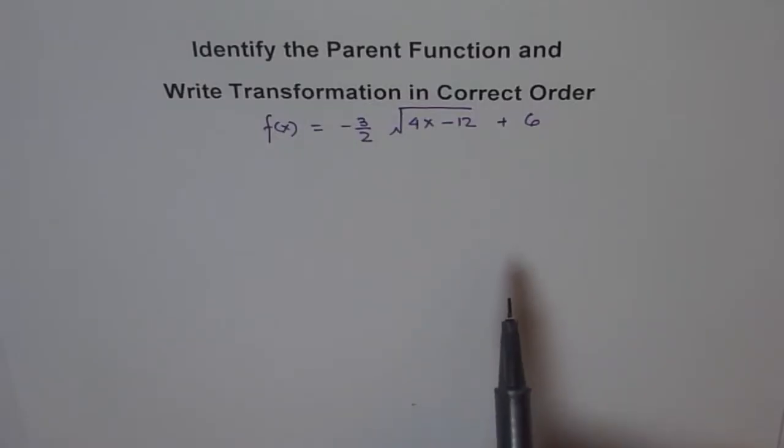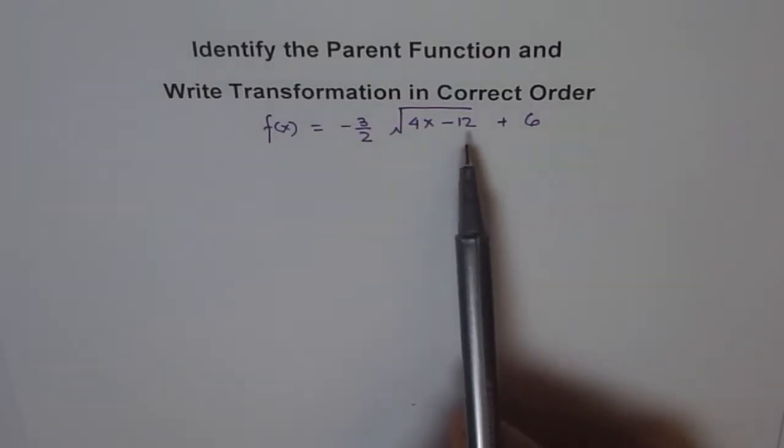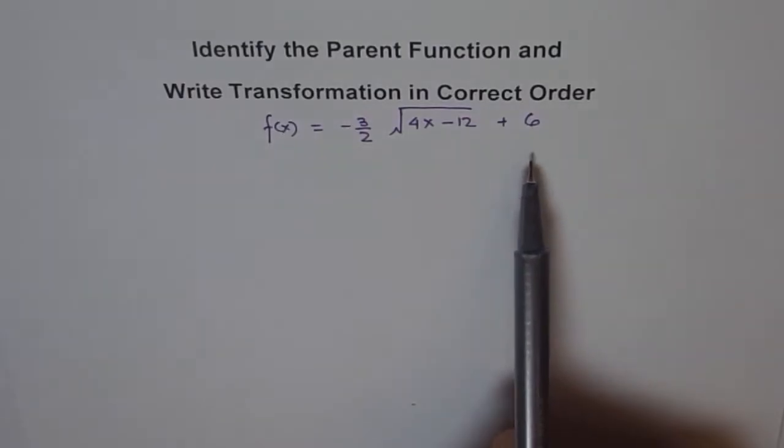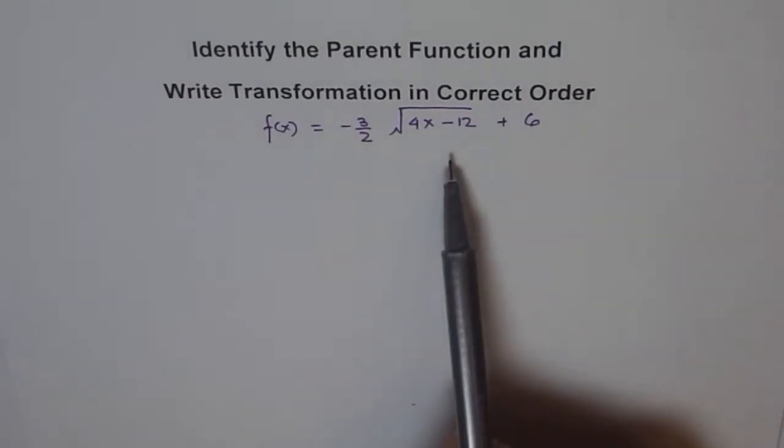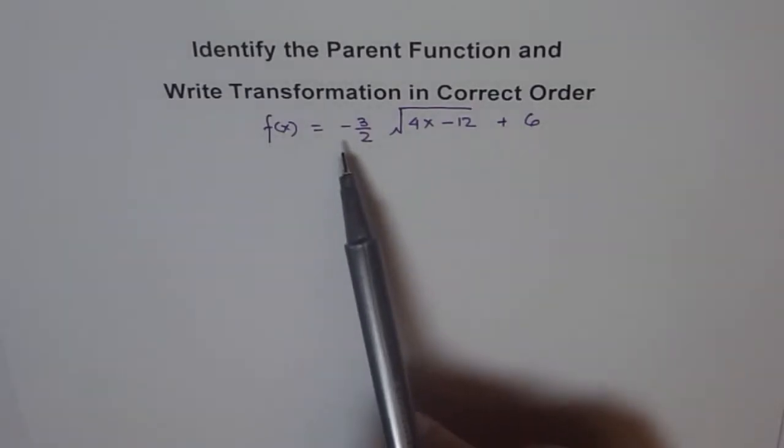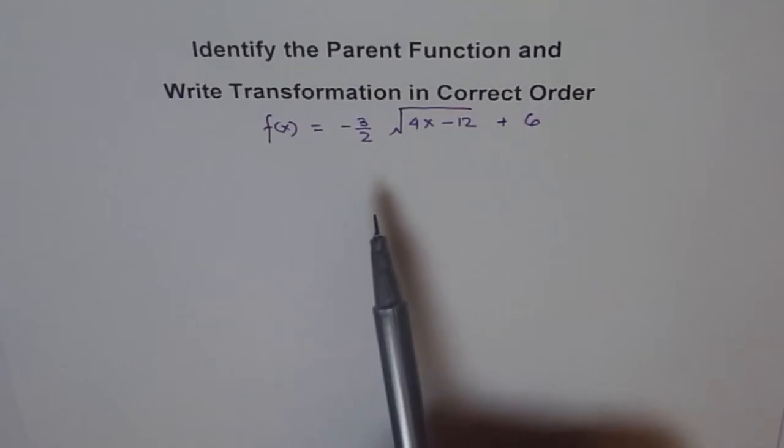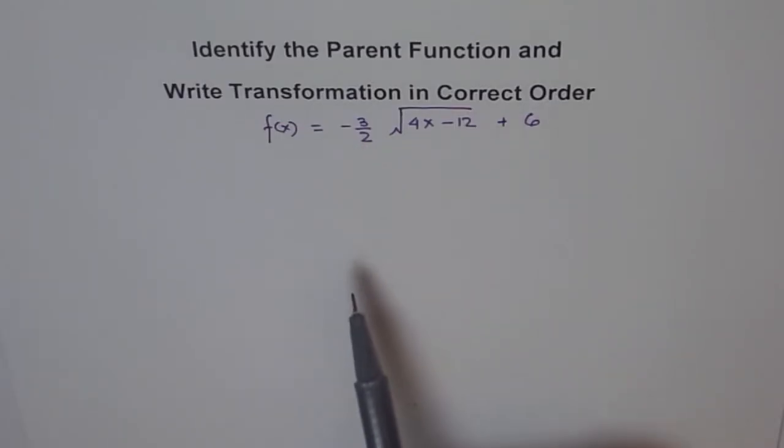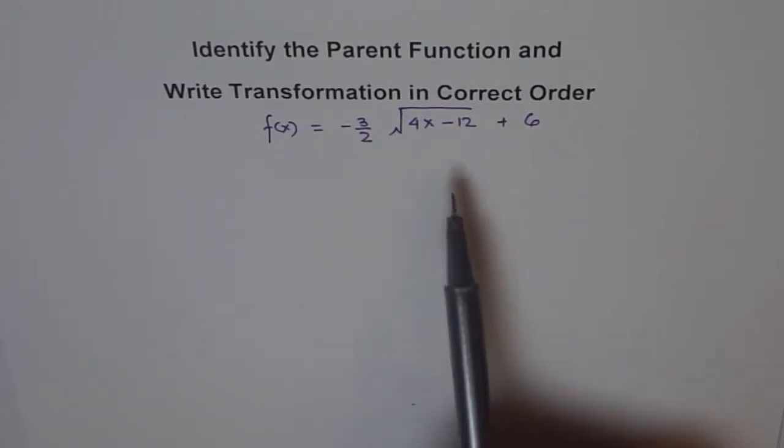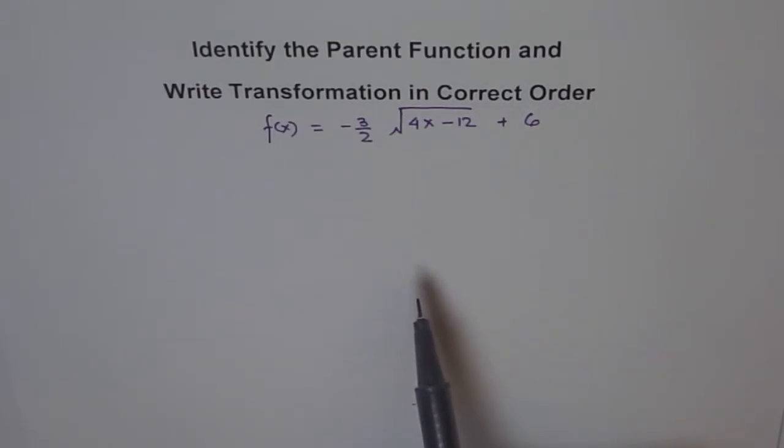Now you can change the order. For example you can write horizontal translation first and then vertical, or you can do vertical translation first and then horizontal. And on the other hand you can do vertical stretches and reflection first and then horizontal reflection or compression or stretch, or you can interchange the operation. But in any case all dealing with multiplication operation should come first and they should be followed by addition, subtraction or translation operations. That is how it should be. So that is what we are trying to achieve in this.